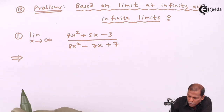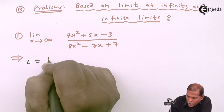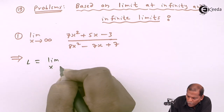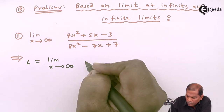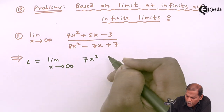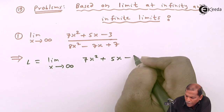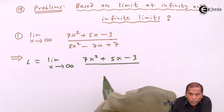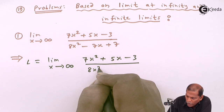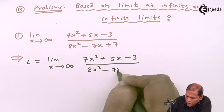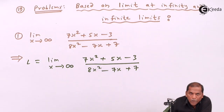Now let's see the solution. First of all, L is equal to the limit as x tends to infinity of 7x squared plus 5x minus 3, whole thing divided by 8x squared minus 7x plus 7.